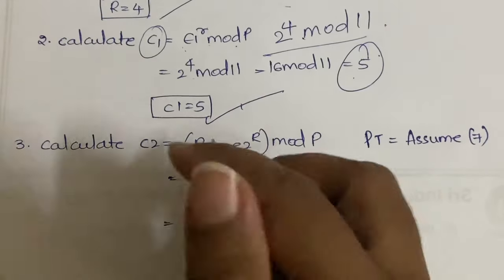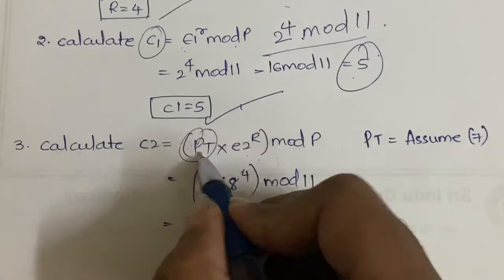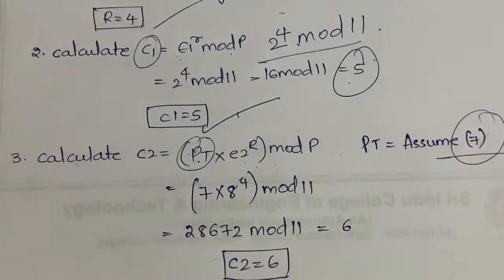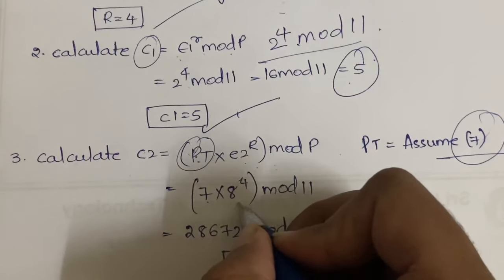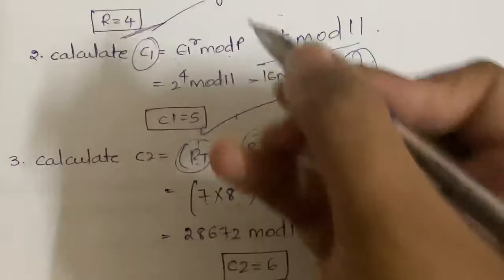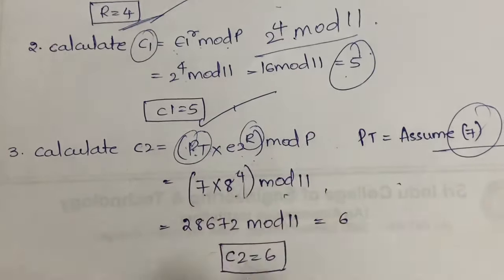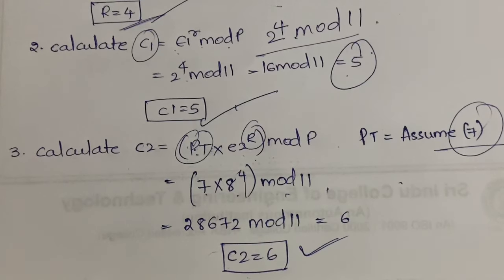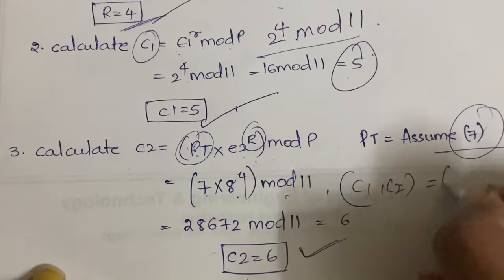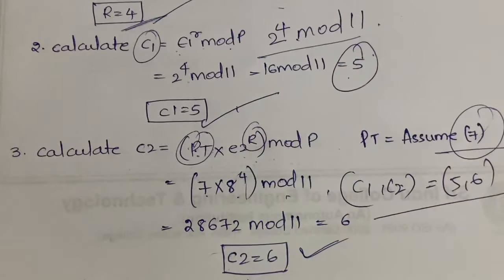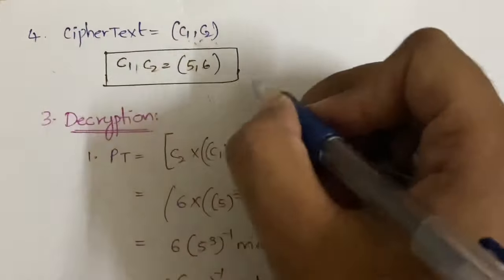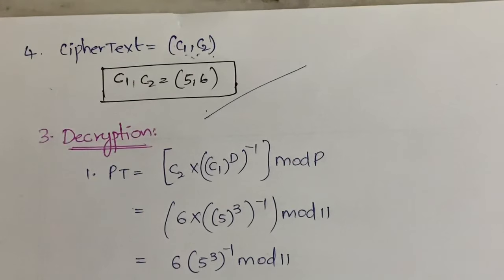Now calculate c2 = pt × e2^r mod p, where pt is the plain text. We assume pt = 7. So c2 = 7 × 8^4 mod 11. You can use a calculator for this — the value of c2 comes out as 6. So the cipher text (c1, c2) = (5, 6). Encryption is complete.